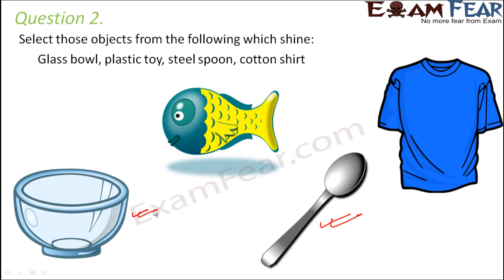When you talk about a cotton shirt, it doesn't have any shine as such because cotton on its own doesn't have any shine. A plastic toy again doesn't have any shine of its own. So the objects that shine are the steel spoon and the glass ball.